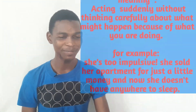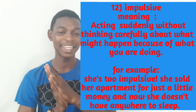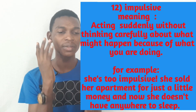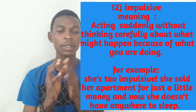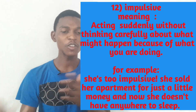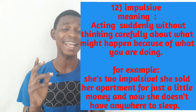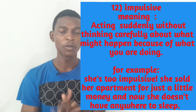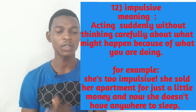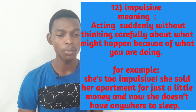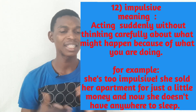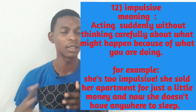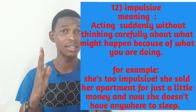And the last one, number twelve, is impulsive. Impulsive means acting without thinking carefully about what might happen because of what you are doing. If someone is impulsive, it means this person is acting without thinking carefully. For example, she's too impulsive — she sold her apartment for just a little money and now she doesn't have anywhere to sleep. She's acting without thinking carefully about what might happen.